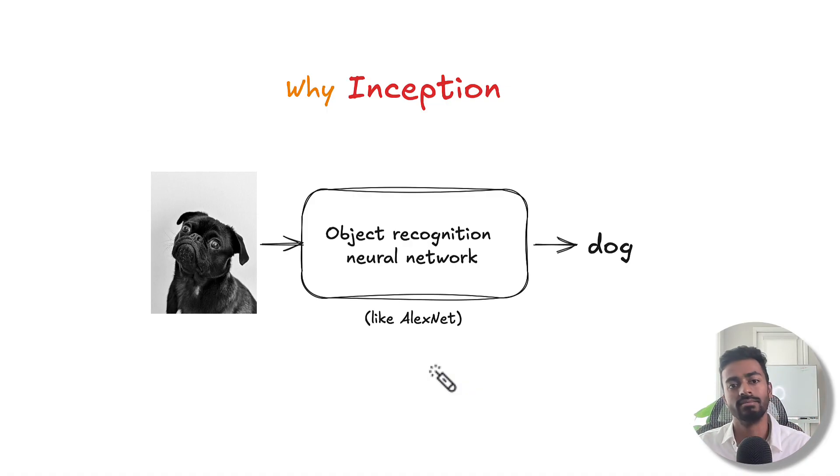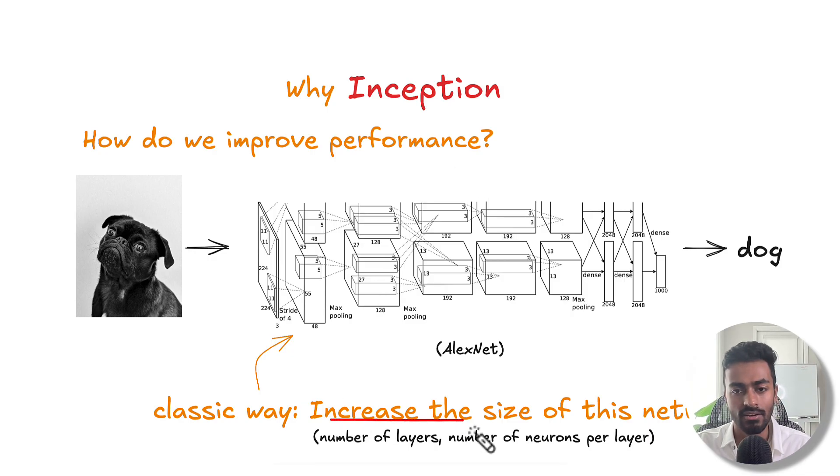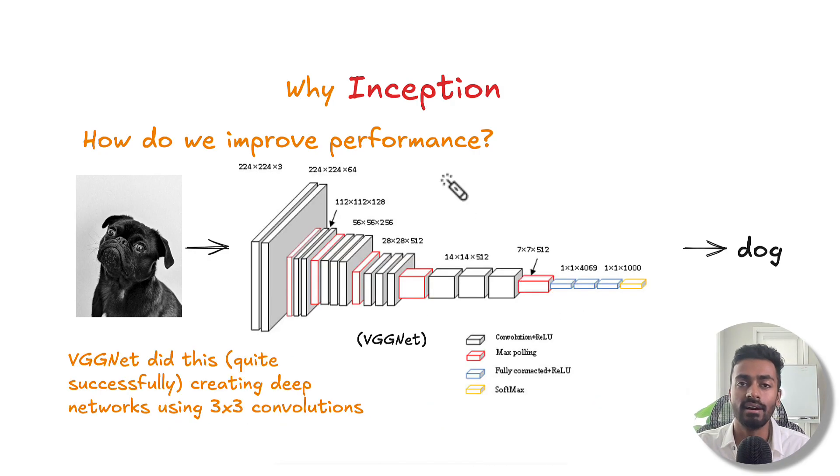Let's talk about that thought process. We have an object recognition neural network. We want to build one that takes in an image and outputs an object category. One way we could do this is like AlexNet which is a good baseline state of the art. But how do we improve performance? A classic way is to increase the size of this network, that is increase the number of layers or the number of neurons per layer. Another network that came around this time was VGGNet. They did it quite successfully creating deep convolution networks using only 3x3 convolutions as opposed to much larger convolutions like the 11x11 that we would see in AlexNet. Hence they were able to make an effectively deep structure that could perform almost as good as this inception model too.